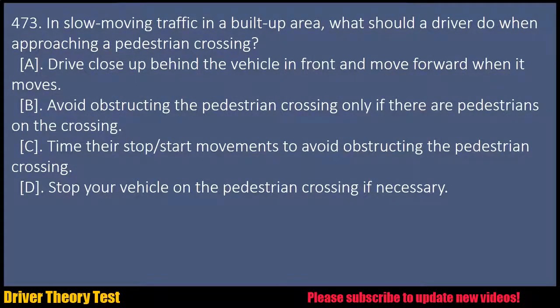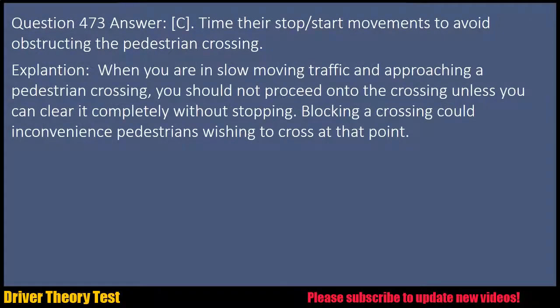Question 473: In slow-moving traffic in a built-up area, what should a driver do when approaching a pedestrian crossing? A. Drive close up behind the vehicle in front and move forward when it moves. B. Avoid obstructing the pedestrian crossing only if there are pedestrians on the crossing. C. Time their stop/start movements to avoid obstructing the pedestrian crossing. D. Stop your vehicle on the pedestrian crossing if necessary. Answer: C. Time their stop/start movements to avoid obstructing the pedestrian crossing. Explanation: When you are in slow-moving traffic and approaching a pedestrian crossing, you should not proceed onto the crossing unless you can clear it completely without stopping. Blocking a crossing could inconvenience pedestrians wishing to cross at that point.